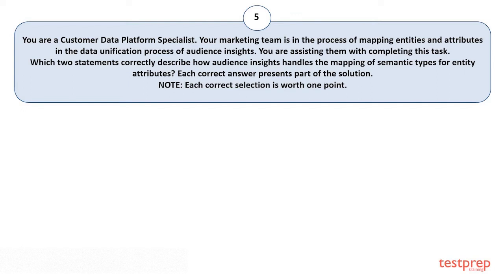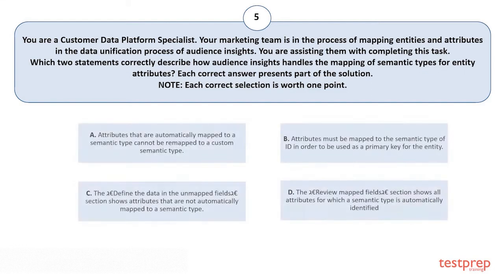Question number five: You are a Customer Data Platform Specialist. Your marketing team is mapping entities and attributes in the data unification process of Audience Insights. Which two statements correctly describe how Audience Insights handles the mapping of semantic types for entity attributes? Option A: Attributes that are automatically mapped to a semantic type cannot be remapped to a custom semantic type. Option B: Attributes must be mapped to the semantic type of ID in order to be used as a primary key. Option C: The 'Define the data in the unmapped field' section shows attributes not automatically mapped to a semantic type. Option D: The 'Review mapped fields' section shows all attributes for which a semantic type is automatically identified. The correct answer is Option D.